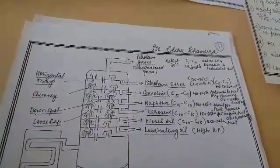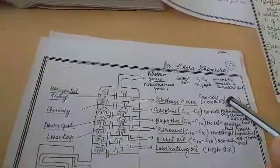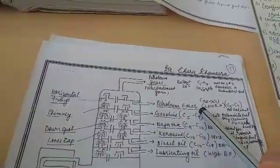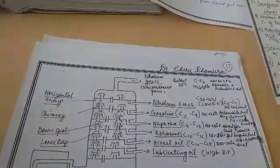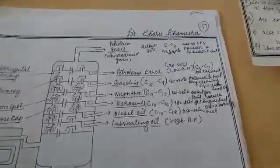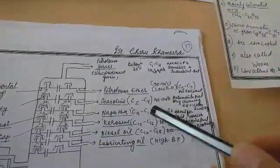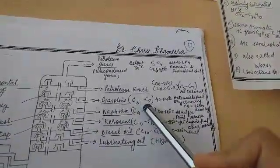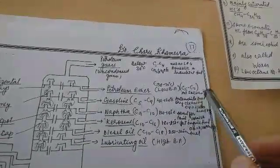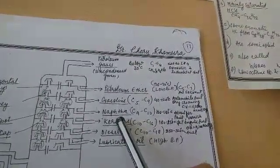The lightest fractions — such as LPG — are collected at the top of the tower and are used as domestic and industrial fuel. The next fraction is petroleum ether, collected at 30 to 70 degrees centigrade, used as a solvent. Gasoline, also known as petrol, contains carbon 5 to carbon 9, is collected at 40 to 120 degrees centigrade, and is used for dry cleaning as well as automobile fuel.